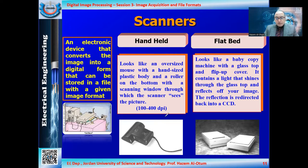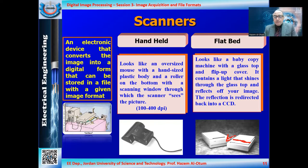Inside the scanner there is a scanning part that moves above or below, left and right. This is essentially a CCD — but in the shape of a line, not a square. It's a line-shaped CCD that scans the page row by row from start to finish. That is the difference between a regular CCD and a scanner's CCD.